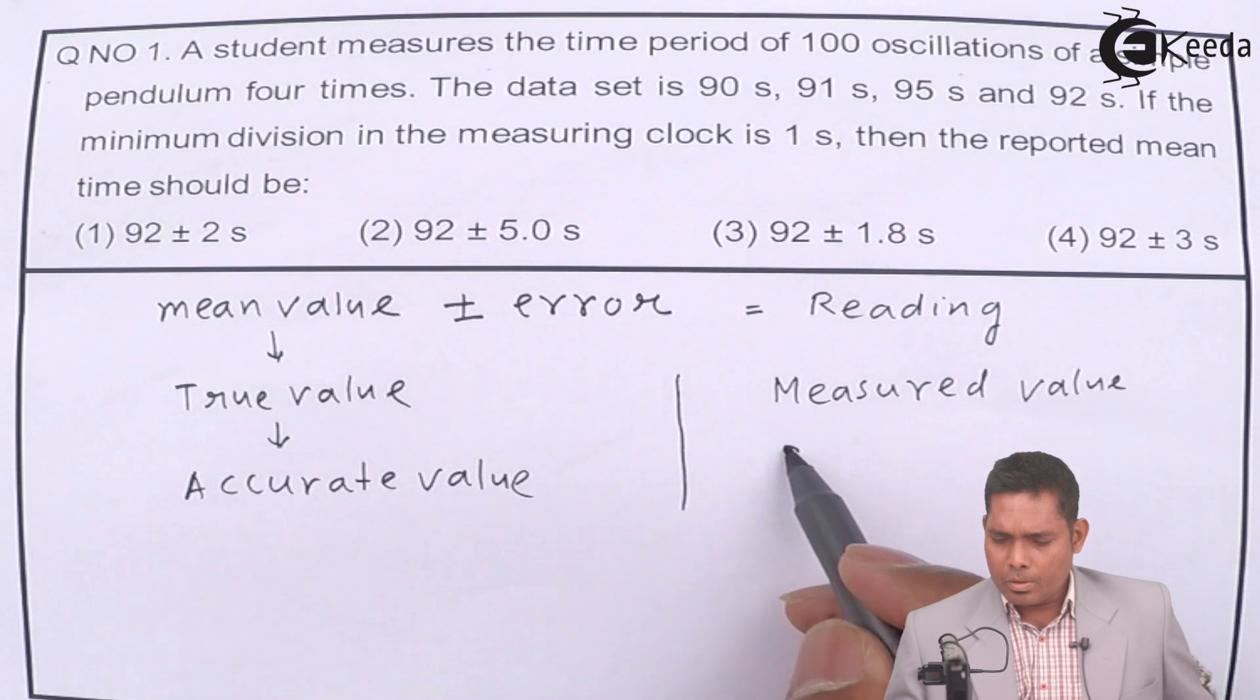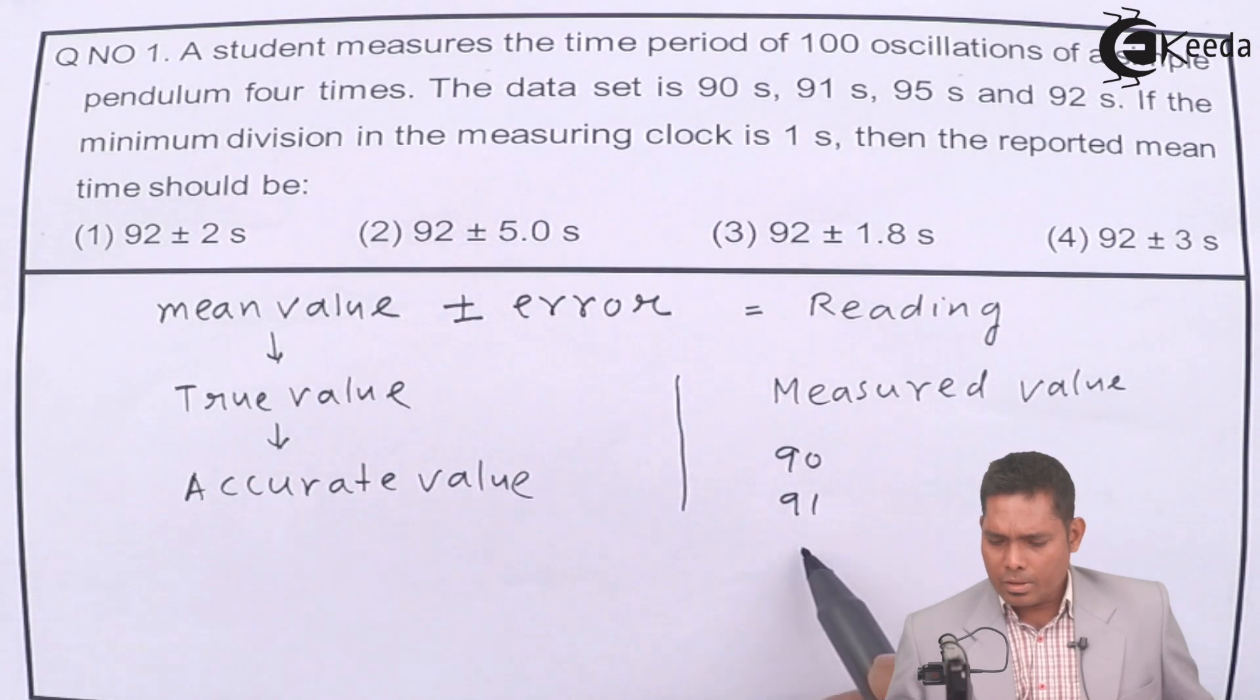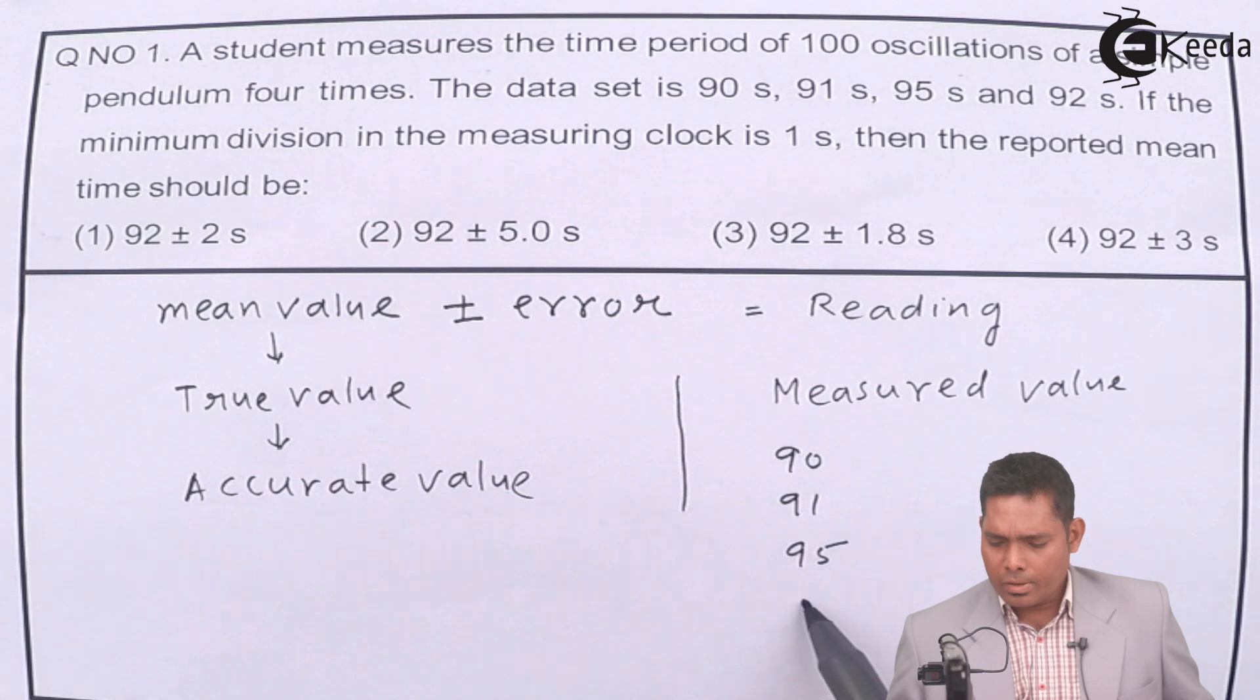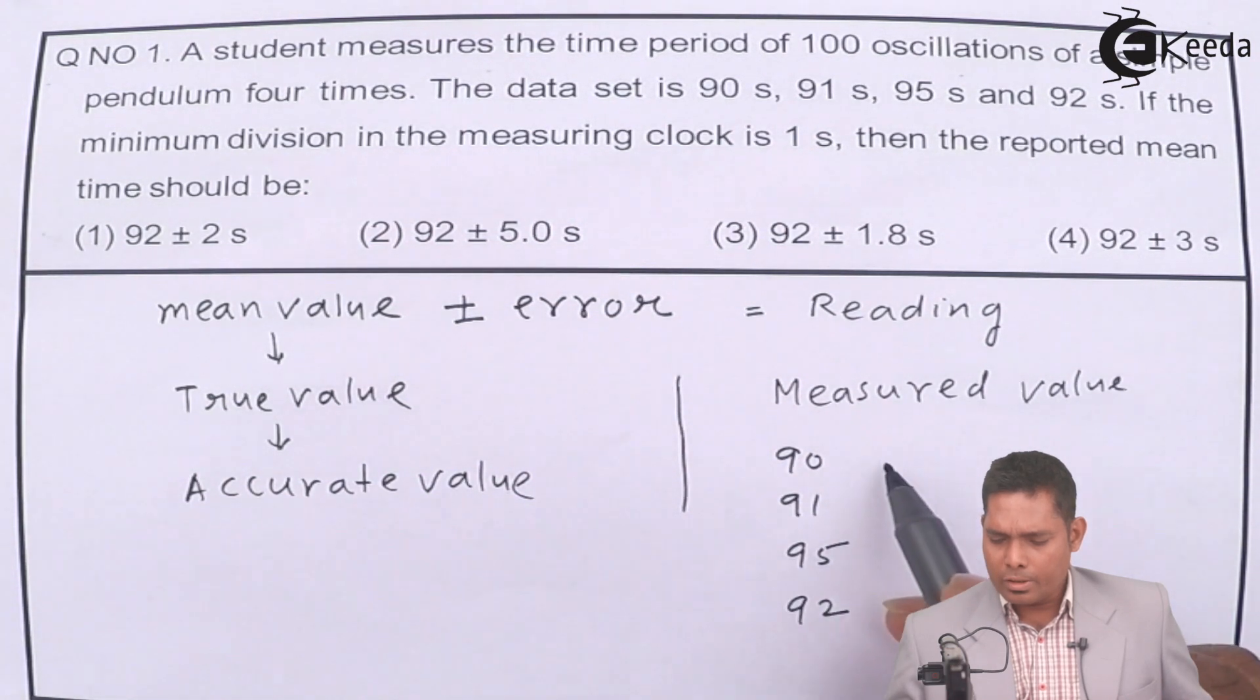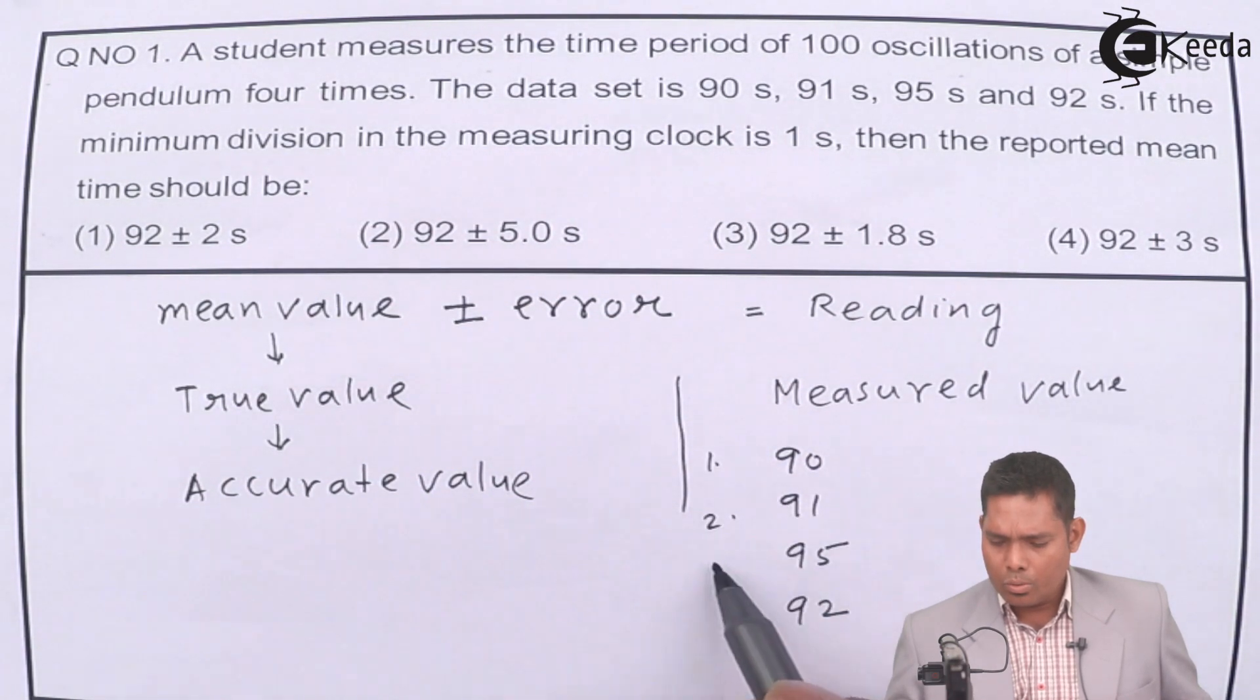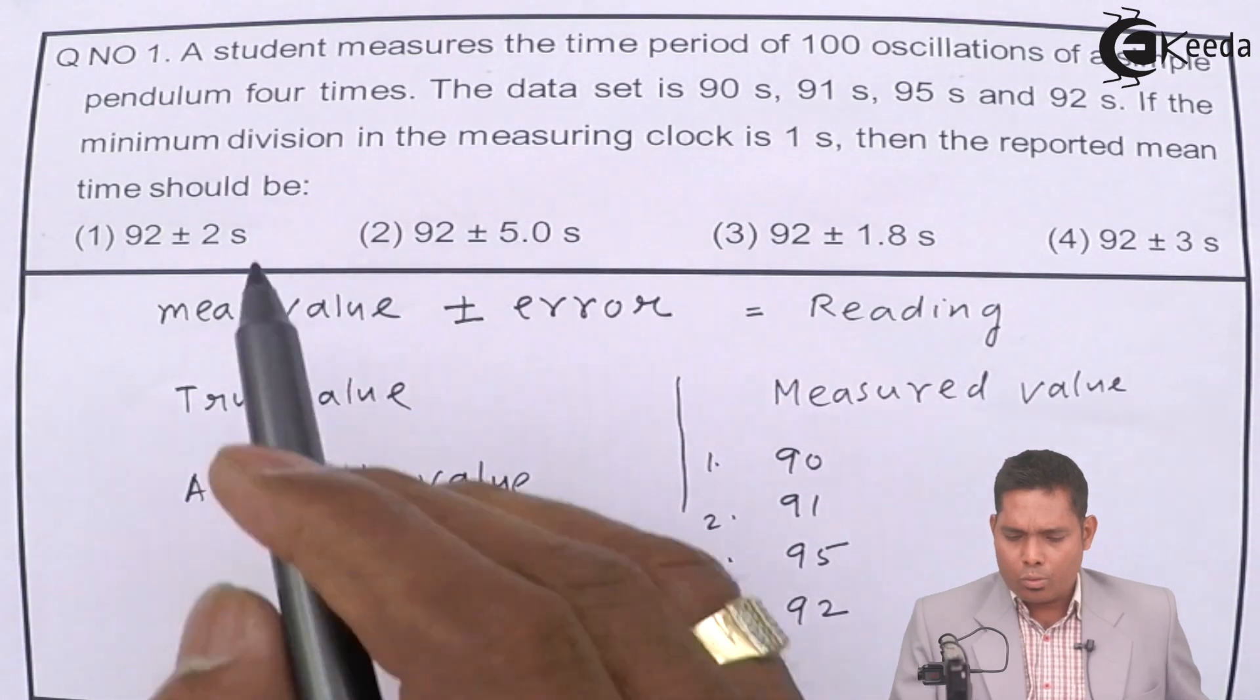The measured values are 90 seconds, 91 seconds, 95 seconds, and 92 seconds. Four readings, 1, 2, 3, and 4, four times.